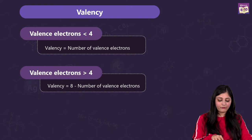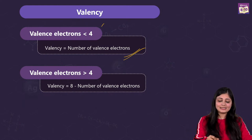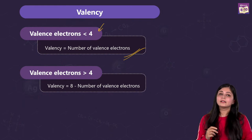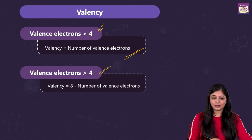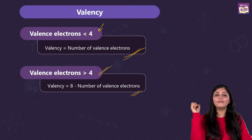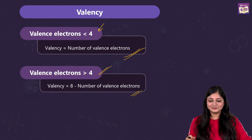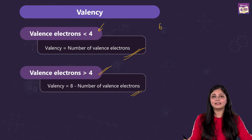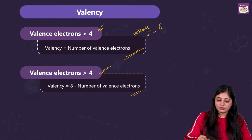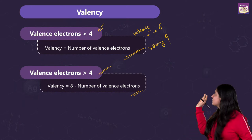We can generalize: if there are fewer than four valence electrons, valency equals the number of valence electrons. If the number of valence electrons equals four, valency will be four. If valence electrons are more than four, valency equals 8 minus the number of valence electrons. Keep this in mind because many questions will be based on this rule. For example, if the valence electrons are six, what is the valency?